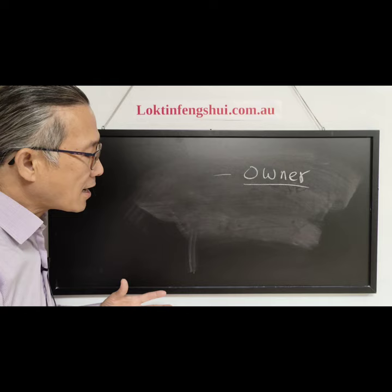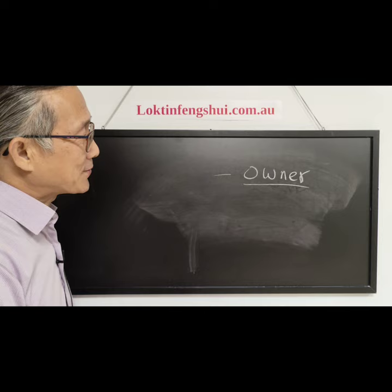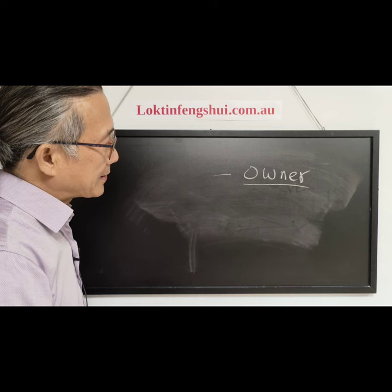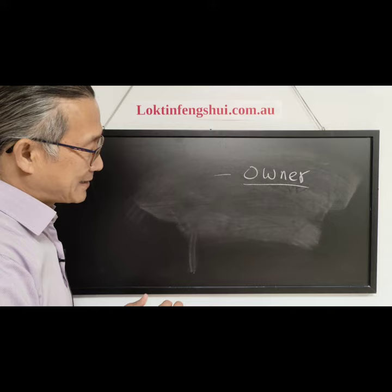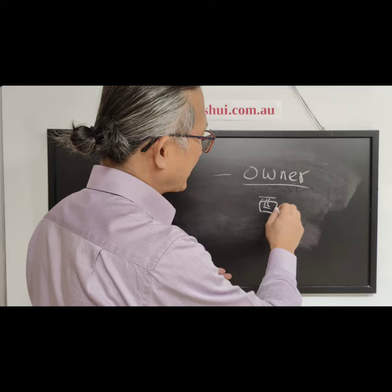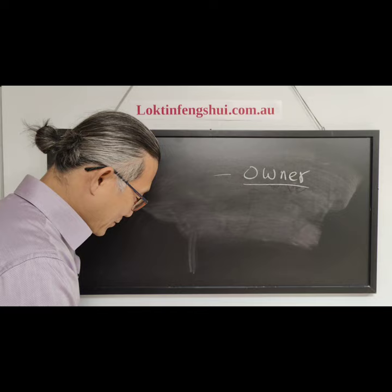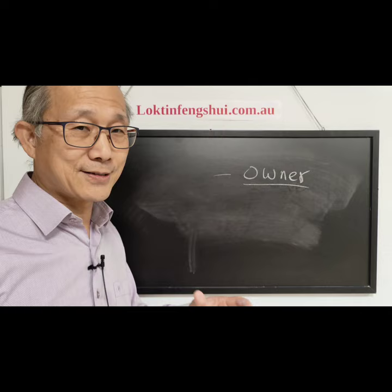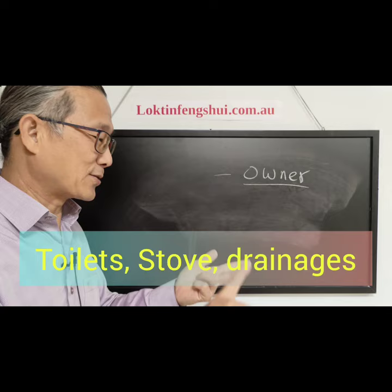Sometimes husband and wife may not be born in the same years, so there are other methods we can use. For example, a couple of days ago I looked at one feng shui case. The house is sitting on the rooster, and both husband and wife were born in the year of the rooster, so they are doing very well in that house. Not only the sitting, we also need to consider other things — for example, the toilet, the kitchen, the door opening, all of this.